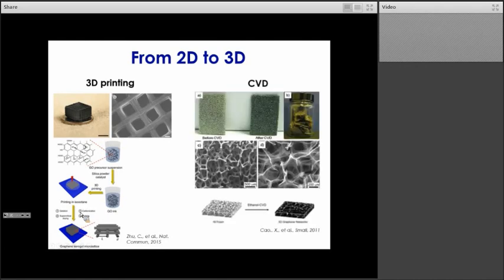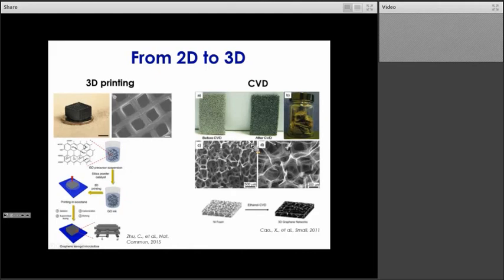Another way is via chemical vapor deposition, or CVD. You start with a microporous support — for this specific study they used nickel foam — and deposit graphene layers on the surface of that support using CVD. Then, as a final step, you have an etching process where you remove the nickel foam to obtain the graphene network. All those different techniques enable obtaining a 3D structure from graphene or graphene oxide at the meso and micro scale.